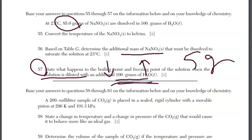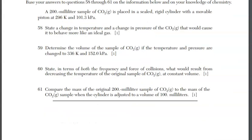Let's move on to the next group, questions 58 through 61. For question 58, state the change in temperature and change in pressure of the carbon dioxide gas that would cause it to behave more like an ideal gas. Any gas behaves more like an ideal gas when we increase the temperature and decrease the pressure. You have to know that for question 58.